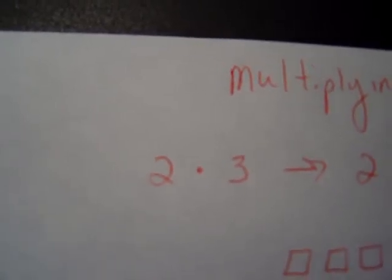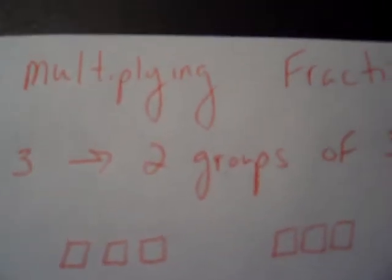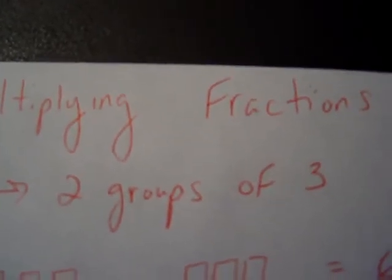If we have 2 times 3, which can be represented as 2 dot 3, that means two groups of 3. The word multiply can often be substituted with the word of. So 2 times 3 has the same meaning as two groups of 3.